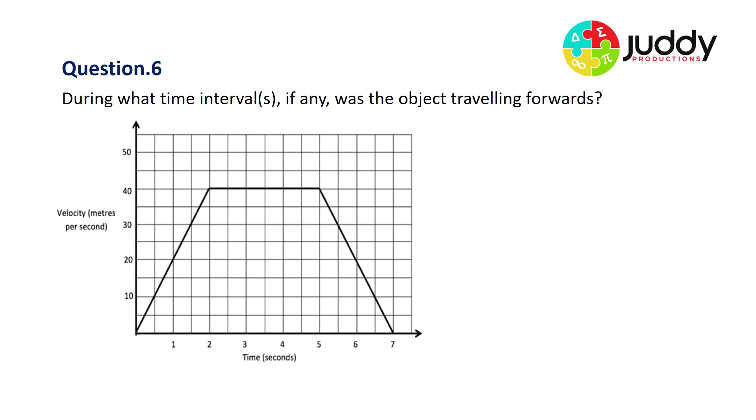Question six, during what time interval or intervals, if any, was the object traveling forwards? The object was traveling forwards for the entire duration of the journey. The line is always above the x-axis. This is always moving forward.